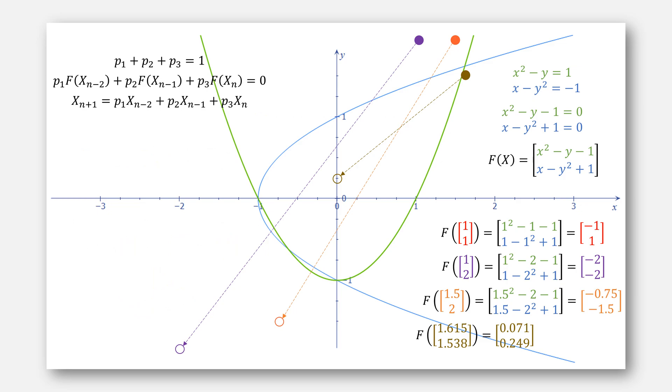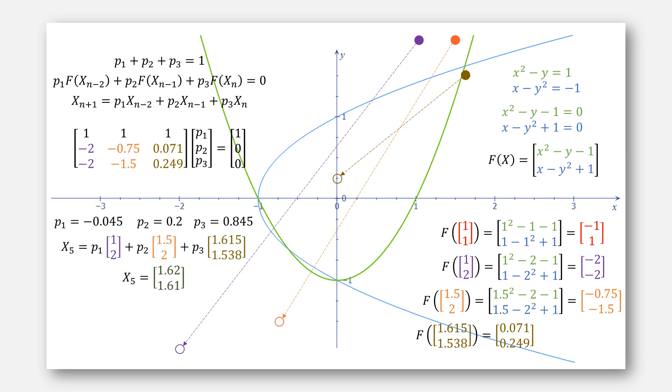Then we take our last three points, notice how we no longer need the value of 1, 1, and use this in our linear system. We solve the linear system like before, and use our new summation to give this value for x5, plot it right there.